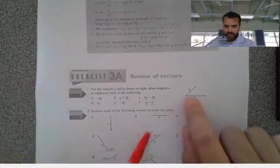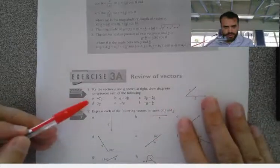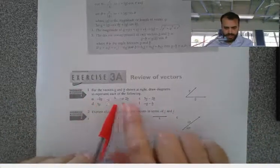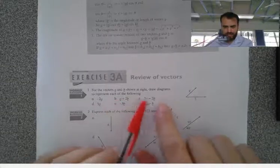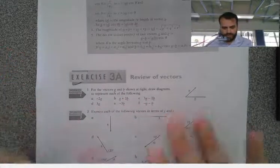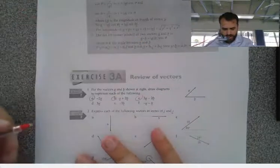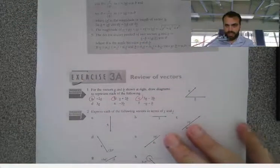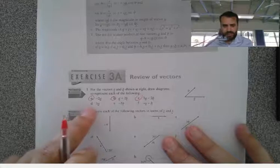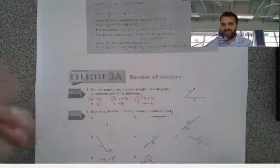So we've got two vectors here, A and B, and this question asks you to find like negative 2A or add the two vectors together or subtract one vector from the other. So I'm just going to do question A, B, C. That's enough. If you can do A, B, and C, you can definitely do D, E, and F. I think they're all pretty much the same.